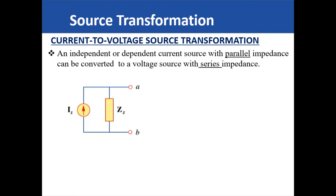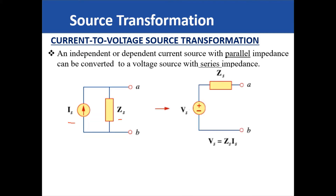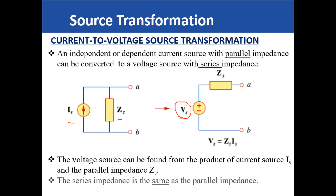Similarly, let's say you have a current source — it may be an independent or dependent current source — that is in parallel with an impedance. This combination can also be transformed into a voltage source, where the voltage source is found by multiplying the current source and the impedance on the original circuit, and this impedance is found by simply copying that impedance.